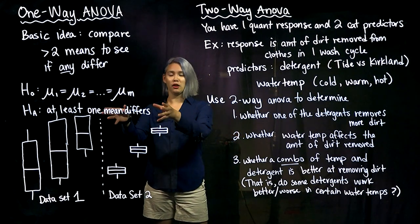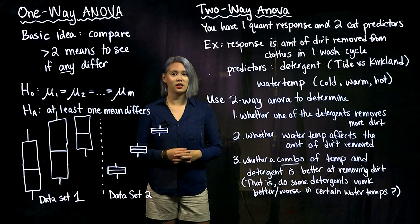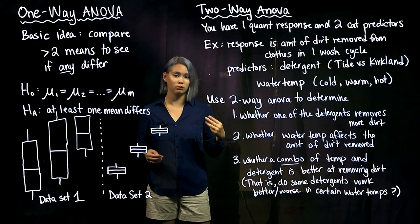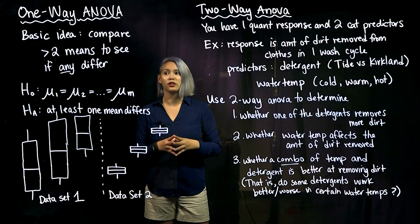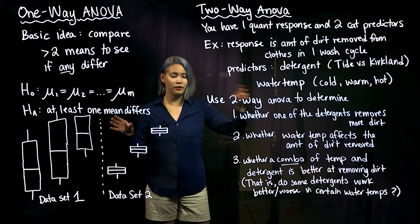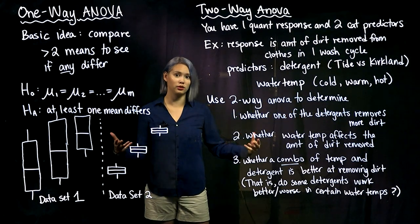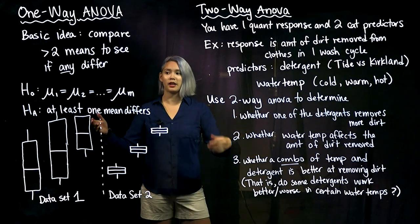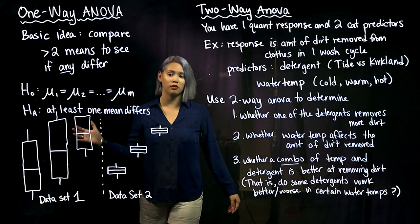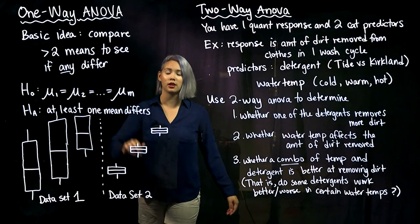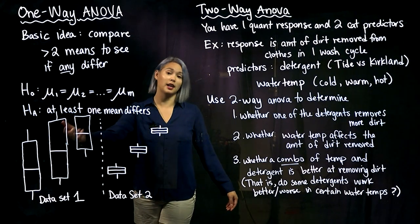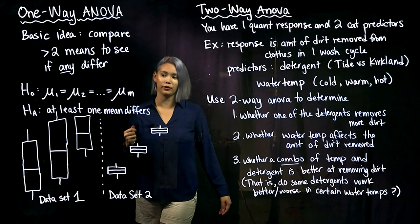First, one-way ANOVA. The basic idea here is that you have at least three populations — three or more populations — and you're trying to compare the mean of each of those populations to see if any of those differ. So our null hypothesis is that all the means from all of the m populations are equal, and then the alternative hypothesis is that at least one of these means differs.